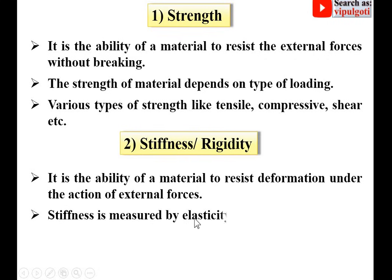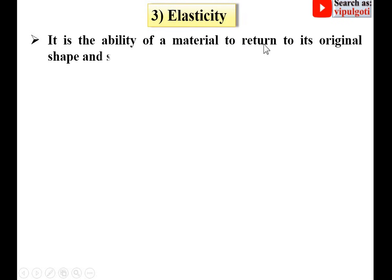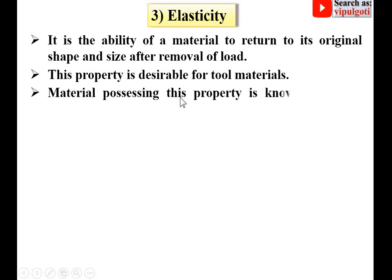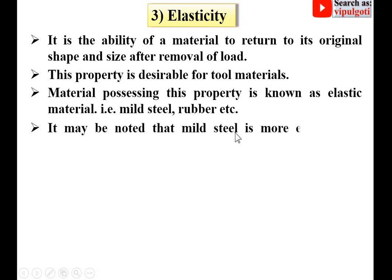Stiffness is measured by elasticity. Third, elasticity is the ability of a material to return to its original shape and size after removal of load. This property is desirable for tool materials. A material possessing this property is known as an elastic material — examples include mild steel, rubber, etc. An important point: mild steel is more elastic than rubber.